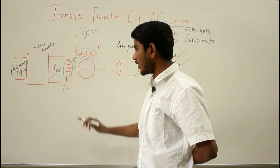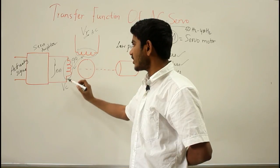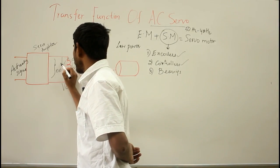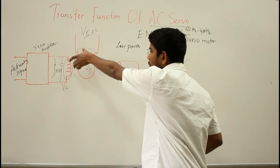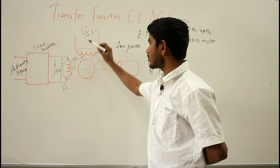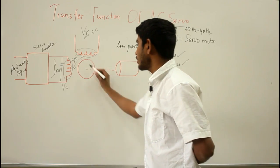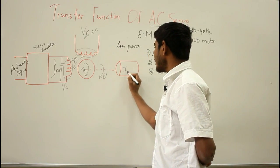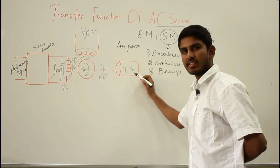To reduce the loading on the servo amplifier, we increase the input impedance of the control phase winding by employing a tunable capacitor in parallel with it. With two windings 90 degrees apart in space and voltages 90 degrees out of phase, a rotating magnetic field is produced, giving rotor torque and causing the motor to rotate. Here TM is the torque developed by the motor, θ is the angular displacement of the shaft, J is the equivalent moment of inertia referred to the motor shaft, and F₀ is the viscous friction coefficient referred to the motor shaft.